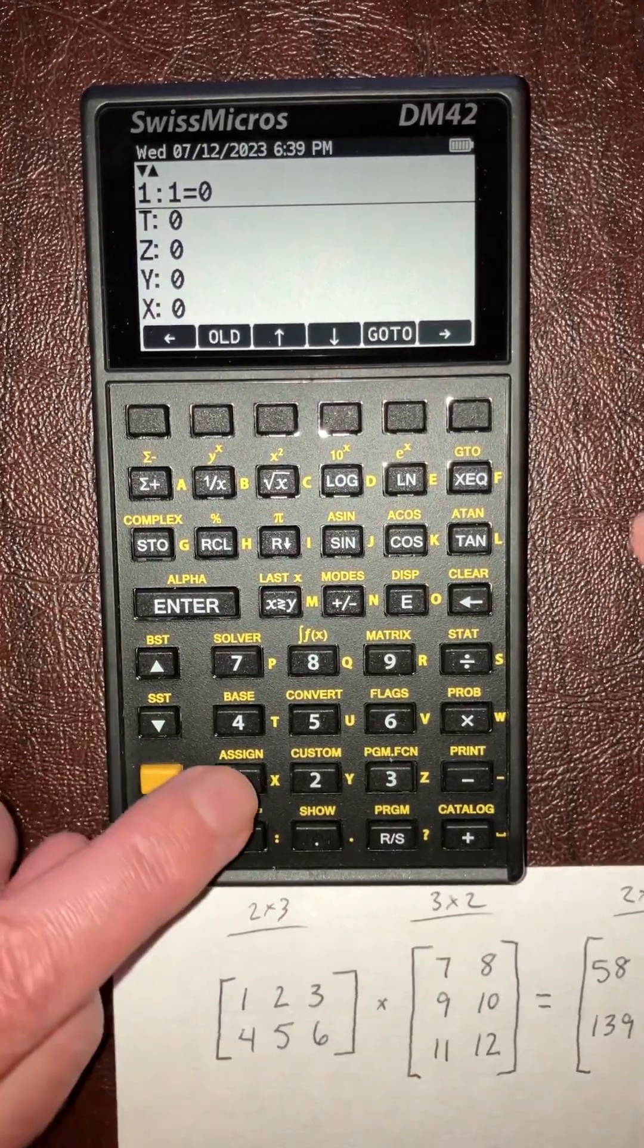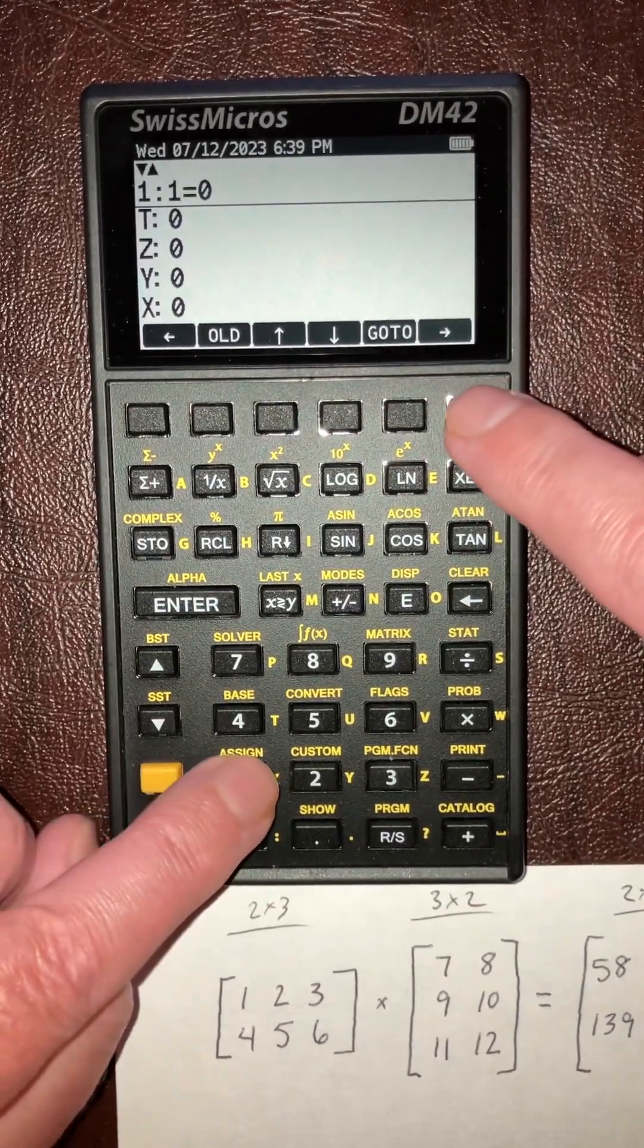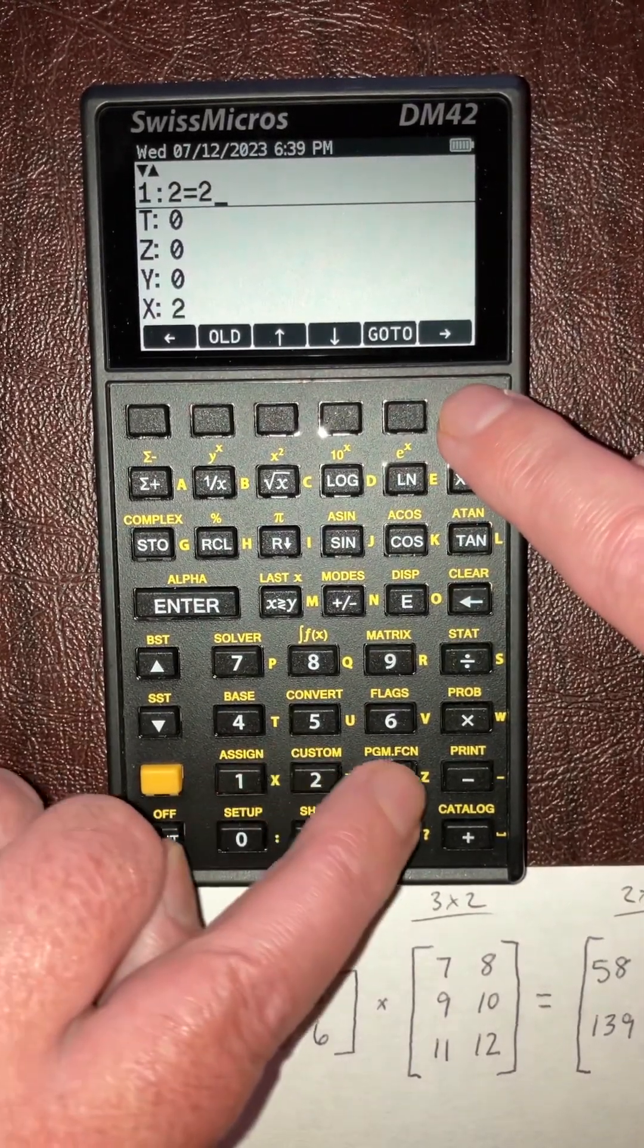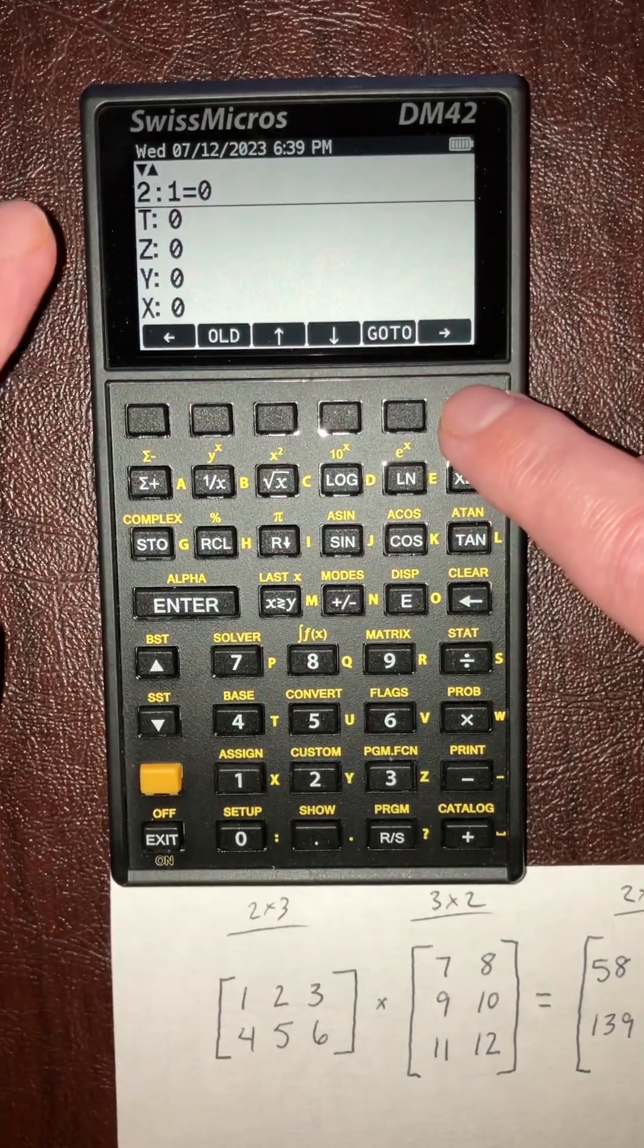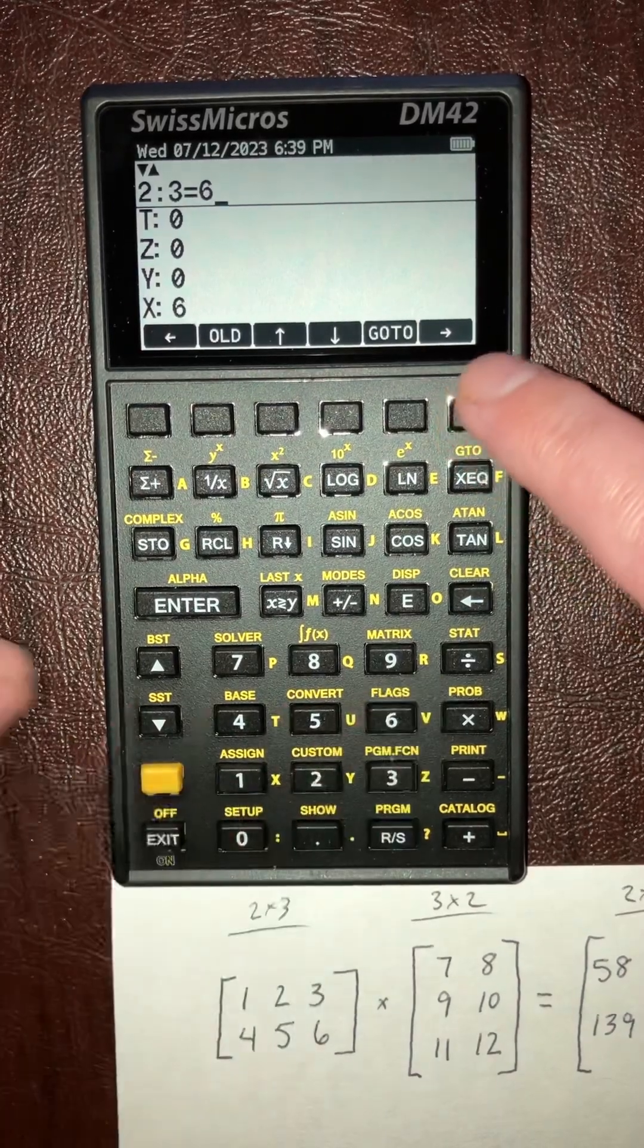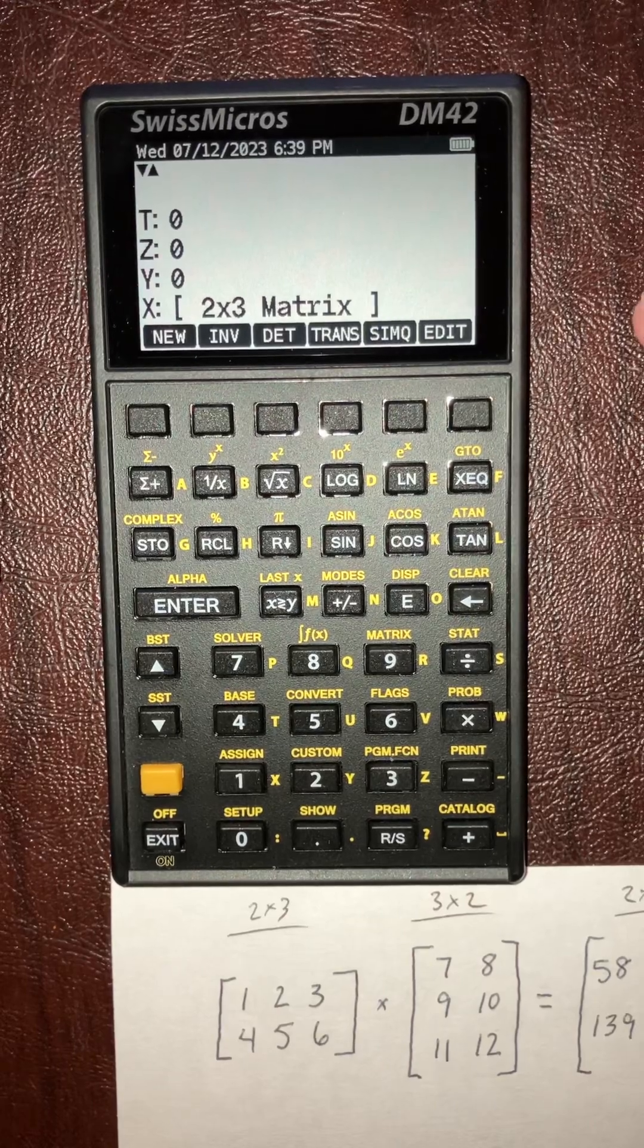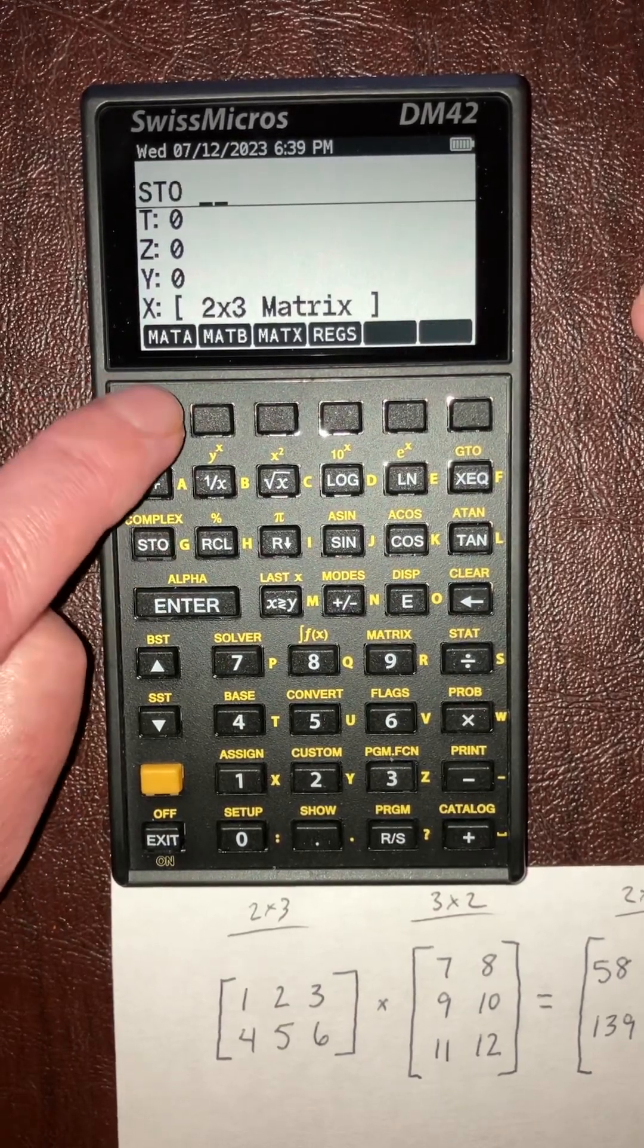Here are the elements. Little arrows up here to control which element you go to. So one, two, three. Hit the right arrow, goes to the second row. You can see row two: four, five, six. Okay, so that one's all entered. Exit. Then I want to store that in matrix A.